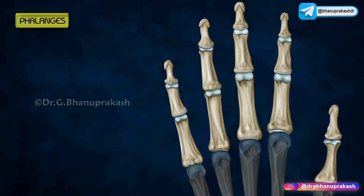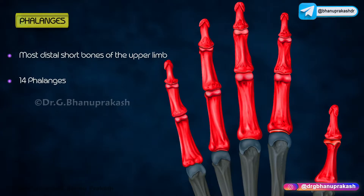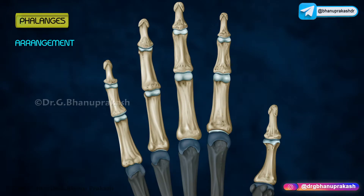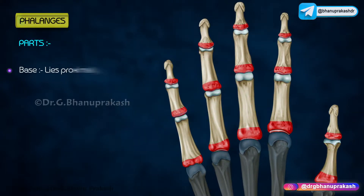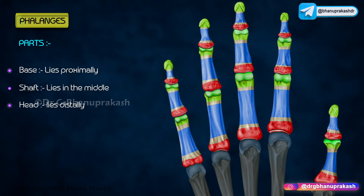Phalanges: These are the most distal short bones of the upper limb. There are 14 phalanges — two for the thumb and three for the four fingers. The proximal row consists of the proximal phalanx, the middle row consists of the intermediate (also known as the middle) phalanx, and the distal row consists of the distal phalanx. Phalanges have the following parts: the base lies proximally, the shaft lies in the middle, and the head lies distally.